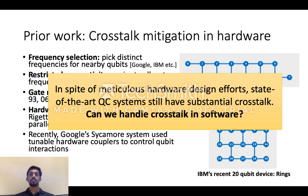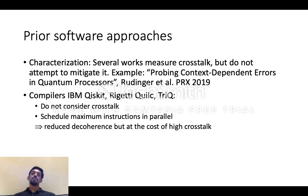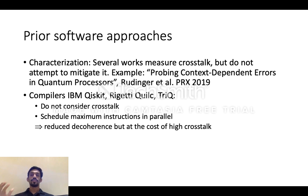So the main question that our paper tries to address is: what can we do about crosstalk noise in software? Although there are several research works which attempt to characterize crosstalk, there is really no prior work which attempts to reduce the effects of crosstalk for programs. In fact, current compilers actually do quite the opposite — in order to reduce the effects of decoherence, compilers actually try to maximize parallelism, scheduling as many instructions as possible in parallel. So this actually increases the crosstalk that programs experience.